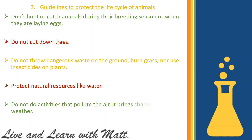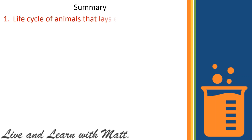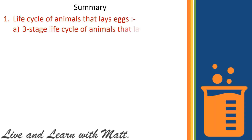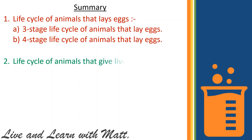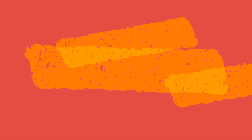In this lesson we've talked about the life circle of animals that lay eggs — the three-stage life circle and four-stage life circles. We've talked about the life circle of animals that give live birth, which are mammals and some fish. And then we've talked about five guidelines to protect the life circle of animals. I hope you've enjoyed the lesson — see you next time, have a great day!